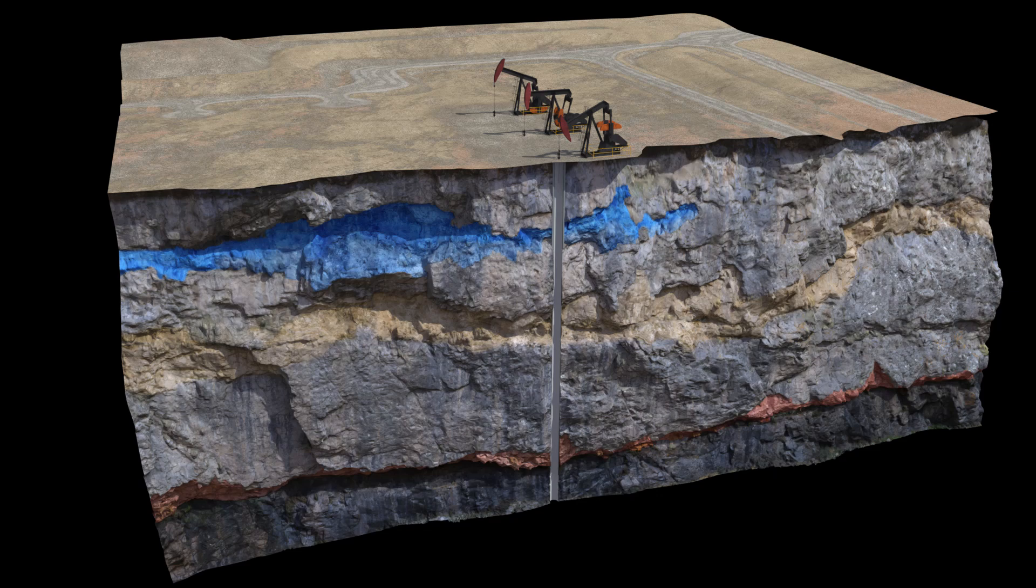These variants include resource type, depths, formations, and production techniques. These same variants also dictate how the well is to be properly plugged and abandoned.